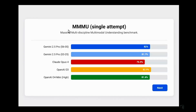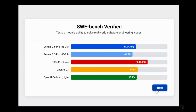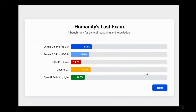On MMMU (Massive Multi-discipline Multi-model Understanding), which tests visual reasoning, all models are plateauing at around 82%, with OpenAI o3 as the best at 82.9%, followed by Gemini 2.5 Pro. On SWE-bench Verified, Gemini 2.5 Pro improved from 63.8% to 67.2%, but the champion remains Claude 4 Opus — when it comes to SWE-bench and real-world software engineering tasks, Claude models have no competition.